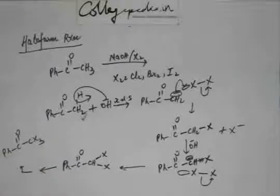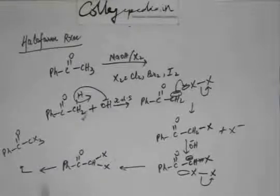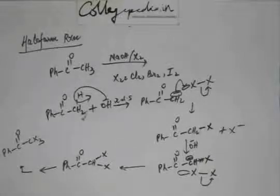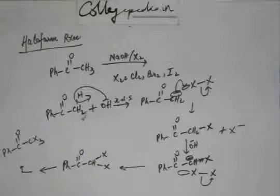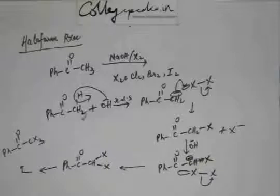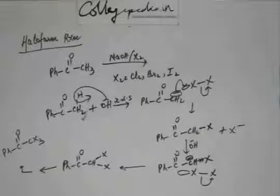Now we have the trisubstituted product — but this is not the end of the reaction. What can happen next? The base will come again. But when it comes for the fourth time, it finds that there is no hydrogen left; they have been extracted all of them. So the next generation of base must find something else — there is no hydrogen left for them to extract.